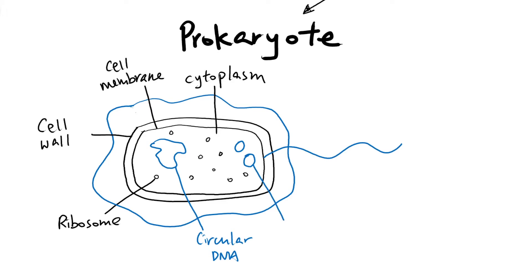Next we have these two round circular structures called plasmids. Plasmids are extra rings of DNA that contain extra genes providing a survival advantage. The circular DNA codes for all the basic proteins the cell needs, whereas plasmids are extra — cells don't need them to survive, but having the genes in the plasmid helps them survive better. For example, a gene coding for antibiotic resistance stops the bacterial cell from being killed easily.